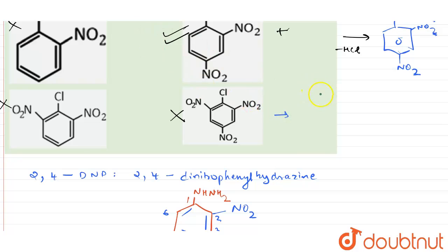At this position nitro group, at this position nitro group, and at this position also nitro group. So we got trinitro, that is incorrect, we need dinitro. Even in this case, I have been treated with H2N-NH2. Here I am going to get NH-NH2.